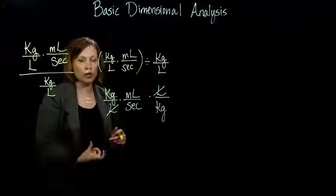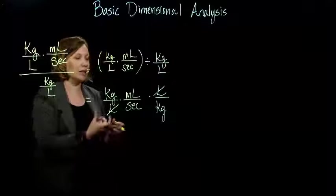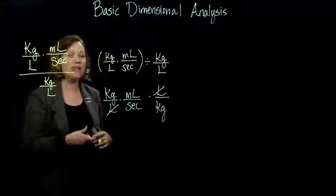Liter over liter makes 1. Just like 2 divided by 2 or 7 divided by 7 or the square root of 3 divided by the square root of 3. If you have the same thing in the top and the same thing in the bottom, that makes 1 and they cancel out.